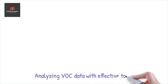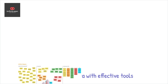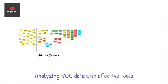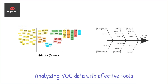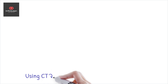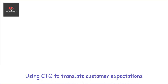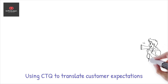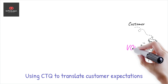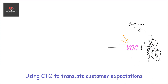Analyzing VOC data is pivotal. Look for common themes or recurrent issues. Utilize tools like affinity diagrams and root cause analysis. These help translate customer expressions into actionable, measurable requirements. Using a critical-to-quality CTQ technique ensures that customer expectations for our product or service will be translated into quantifiable elements in our processes that impact overall quality from the customer's perspective.